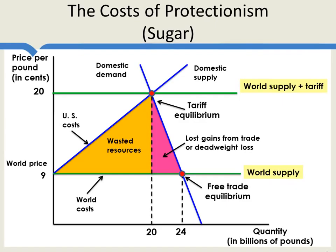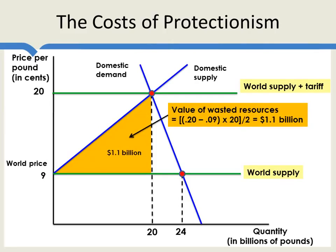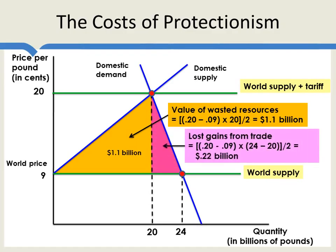We can calculate the sizes of these wasted resources using the supply and demand curves. Economists make assumptions about these curves and calculate the areas. For example, the wasted-resources triangle has a base of 20 and a height of 20 minus 9, so its area is half base times height, giving 1.1 billion. The deadweight loss triangle works out to 0.22 billion. So the total costs of the sugar tariff are 1.32 billion — the kind of calculation economists do all the time.